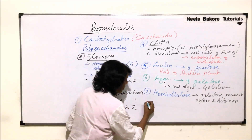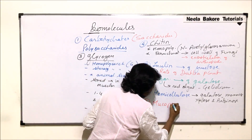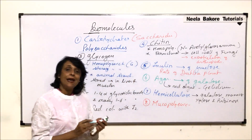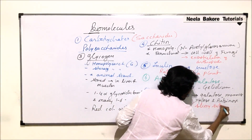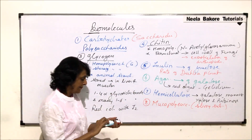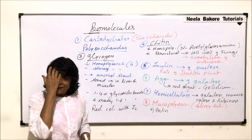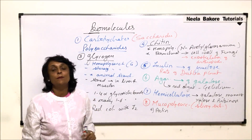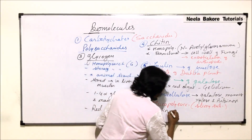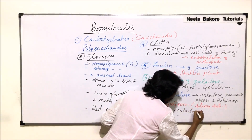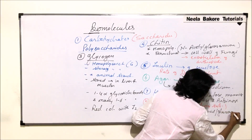The next important group is mucopolysaccharides. Mucopolysaccharides are slimy and sticky substances. An example is pectin, which is present in the middle lamella of the cell wall. It is made up of calcium and magnesium pectate and is composed of galacturonic acid and glucuronic acid.